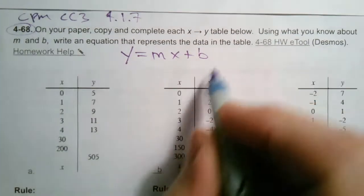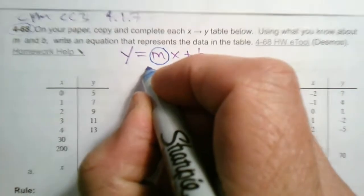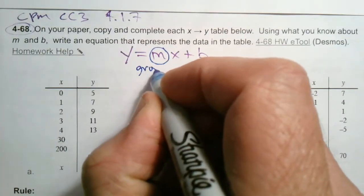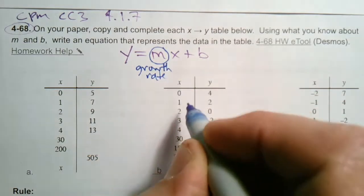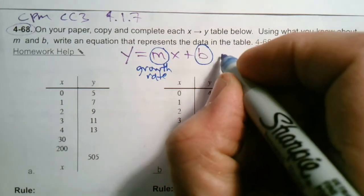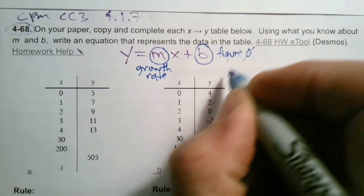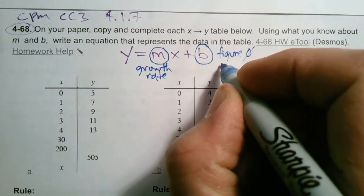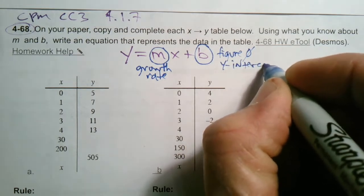So because there's some usage of that, m represents our growth, our growth rate. And then when it comes to graphing, it's also known as the slope. And then the b is always your figure zero or your initial value. It would be your initial value, figure zero, also known as the y-intercept when you're graphing.